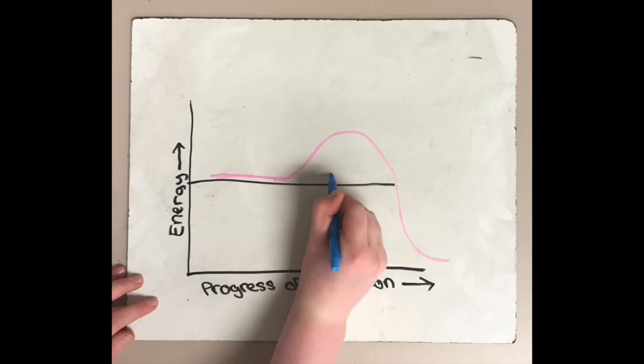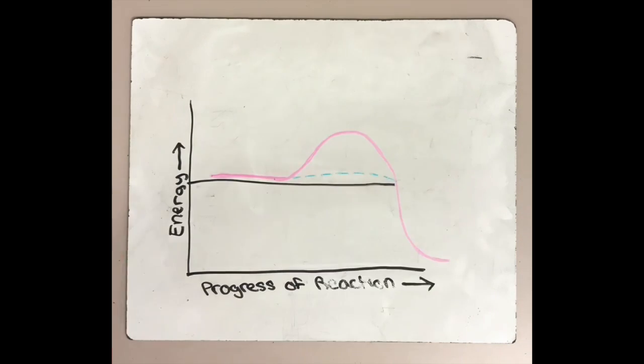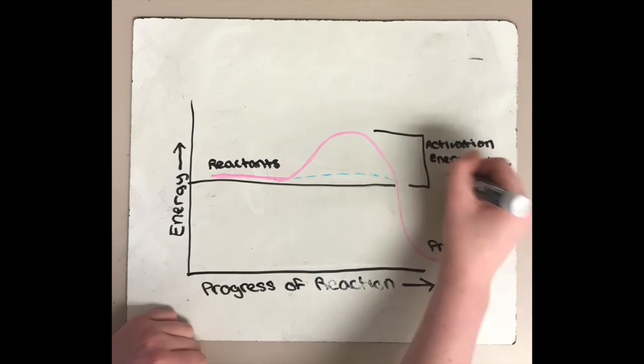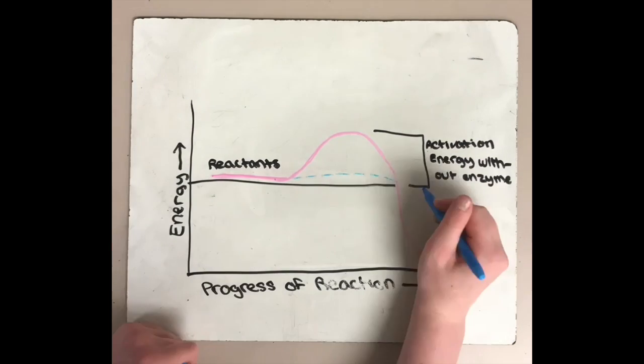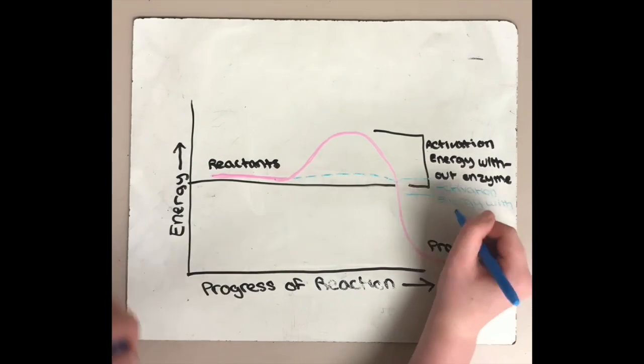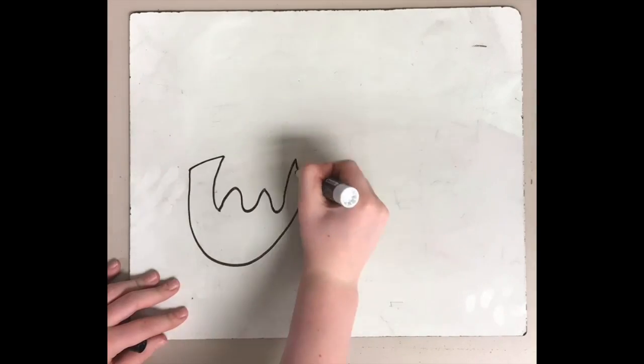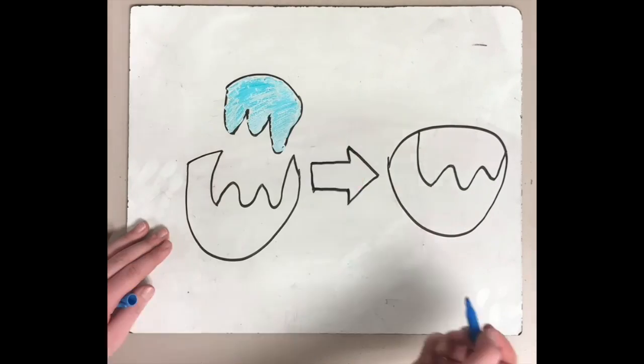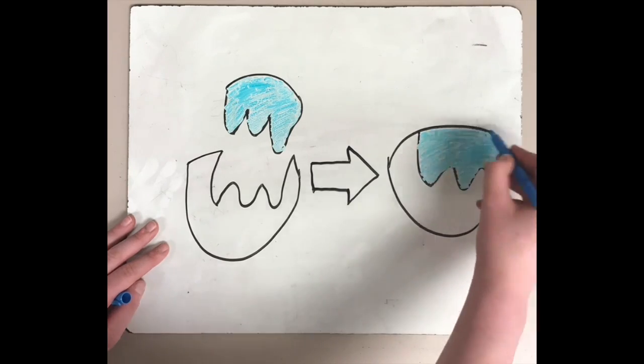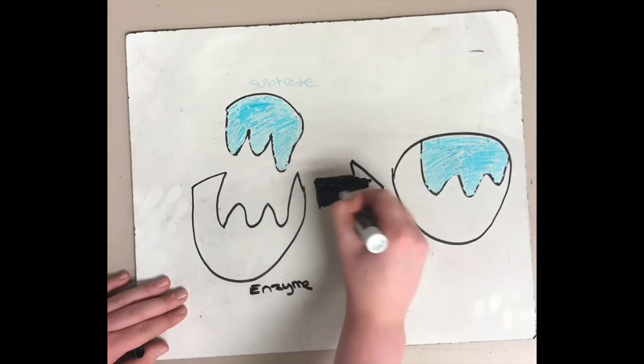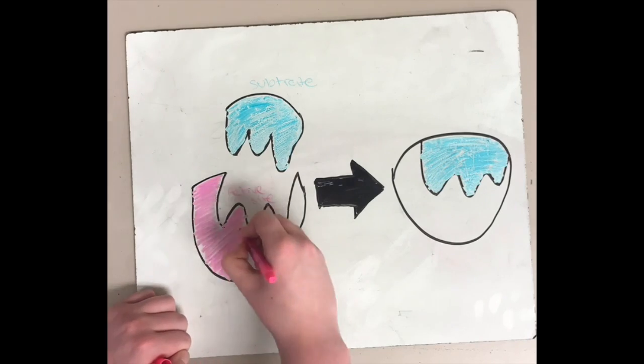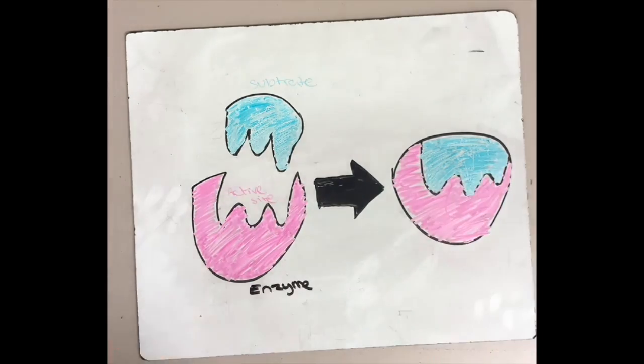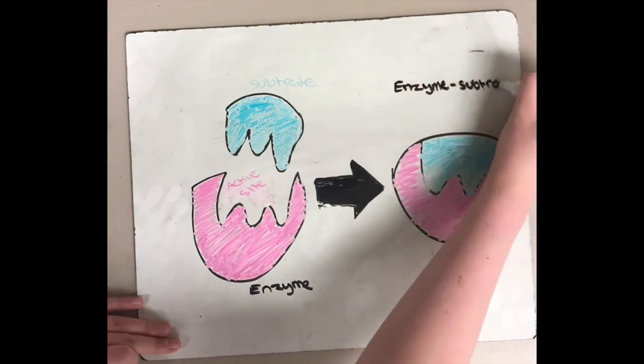Enzymes provide a way for reactions to occur at the cell's normal temperature. An enzyme doesn't supply activation energy to the reacting molecules, but instead lowers the energy requirement barrier so that the reaction can proceed at normal cell's temperatures. The reason is that the shape of each enzyme fits the shape of only particular reactant molecules. A specific reactant acted upon by an enzyme is called the enzyme substrate. The substrate fits into a particular region of the enzyme, called the active site. This perfect fit is sometimes called a lock and key model.